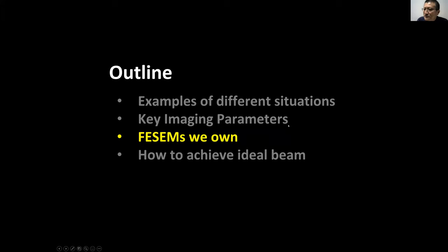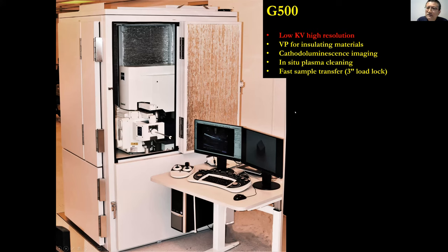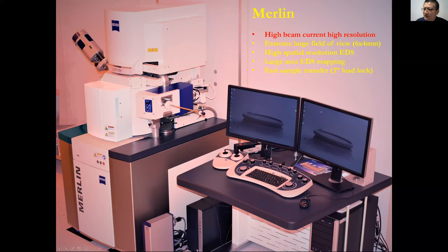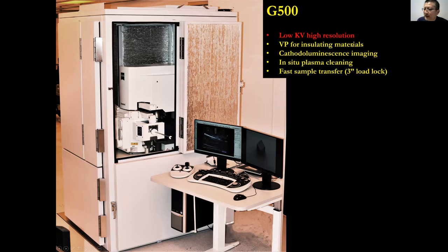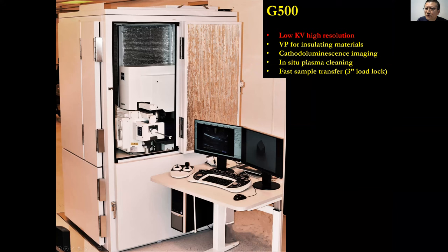Next we talk about the SEMs we have in our clean room — two SEMs: Merlin and G500, both made by Zeiss, both top-of-the-line. For most samples they do similar jobs, but they differ: Merlin can do high beam current at high resolution. G500 can do low kV at high resolution. EDS requires high beam current, so use Merlin. For 2D materials requiring low kV, G500 is better. You need to pick the right SEM for your sample.